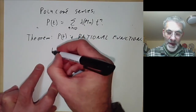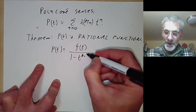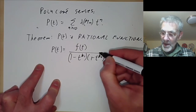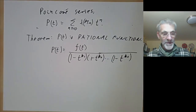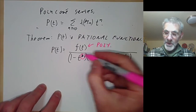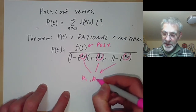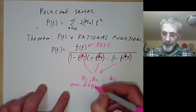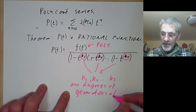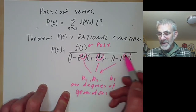More precisely, P(t) is equal to f(t) divided by (1 − t^{k_1})(1 − t^{k_2})···(1 − t^{k_s}), where f(t) is just a polynomial, and k_1, k_2, …, k_s are the degrees of the generators of R. Remember R was a finitely generated algebra over R_0, so we can pick generators of various degrees.